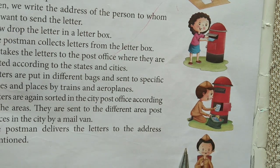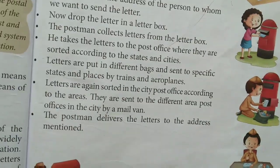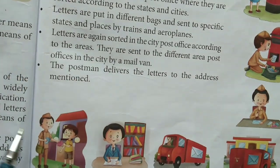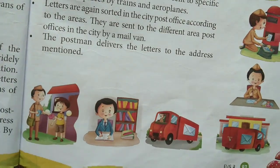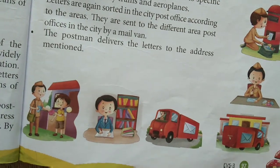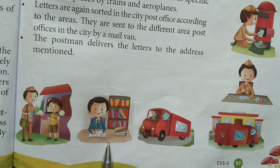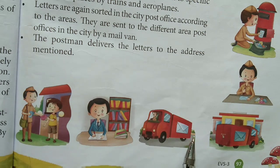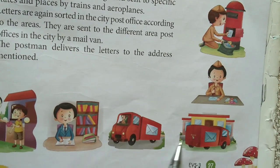Phir waahan jaake unko alag-alag kiya jaata hai — yeh kaunse area ka letter hai. Phir waahan ka jo us area ka postman rehta hai, woh letter ko us address tak pahunchaata hai jo mention rehta hai. Like this picture — postman hai, yahan area mention kiya, kis-kis ko jaana hai, aur us bag mein letters hain.